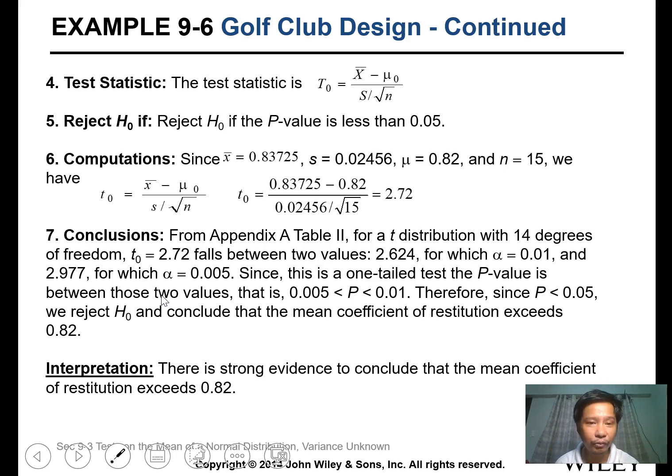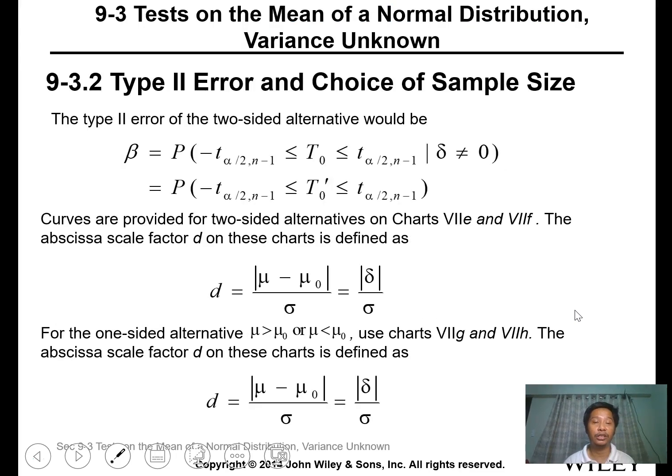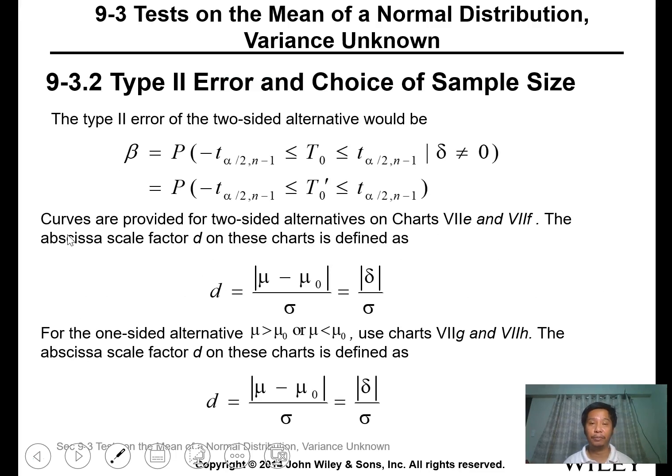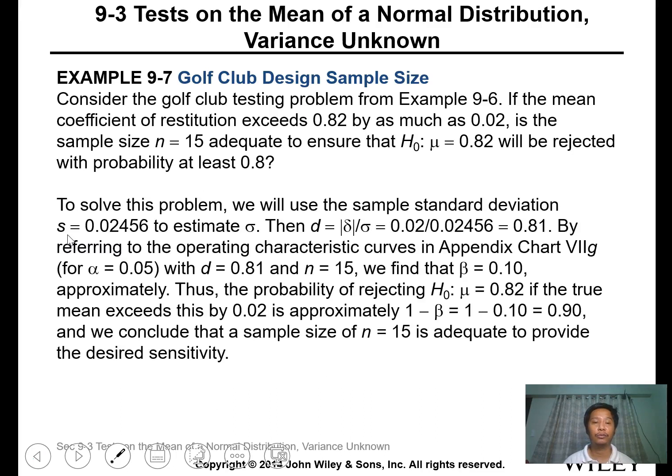The critical p-value is 0.05, so the calculated p-value is between 0.005 and 0.01, so we will reject. Check the t value for 0.05 with degrees of freedom of 14. There is strong evidence to conclude that the mean coefficient of restitution exceeds 0.82, meaning we reject the null. For calculating type 2 error, you can use this value, but we won't cover it extensively as it's not commonly used.